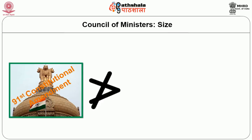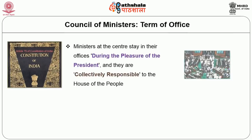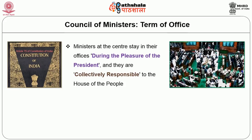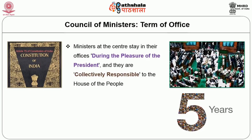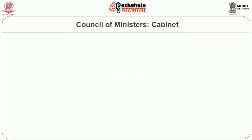Size of the council of ministers: under the 91st Constitutional Amendment Act, the size of the council of ministers at the center and the state cannot be more than 15% of the strength of the Lok Sabha or the state legislative assembly. Regarding the term of office, according to Article 75, the ministers at the center stay in their offices during the pleasure of the president and they are collectively responsible to the house of people, i.e., the Lok Sabha. In normal circumstances the maximum term of office is 5 years, and they would continue in office so long as they enjoy the support of the majority in the lower house.